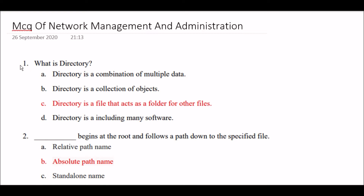Your first question is: What is a directory? Option A: directory is a combination of multiple data. Option B: directory is a collection of objects. Option C: directory is a file that acts as a folder for other files. Option D: directory is including many softwares. The right answer is Option C — directory is a file that acts as a folder for other files.